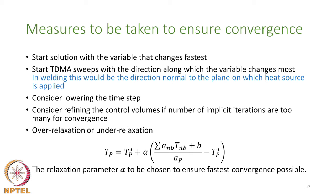To ensure convergence, first solve the variable that changes the fastest — usually temperature. When doing the TDMA sweep, choose the direction in which the variable varies fastest; for temperature, this is the direction normal to the heat source plane. This helps reach a converged solution more quickly.